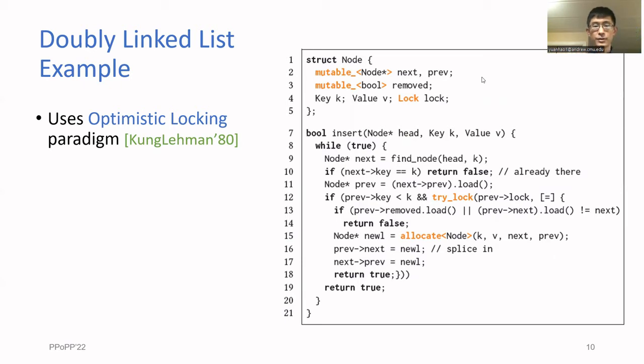We picked the doubly linked list as an example here because lock-free algorithms for it tend to be very complicated, and the one we show here is a lot simpler.